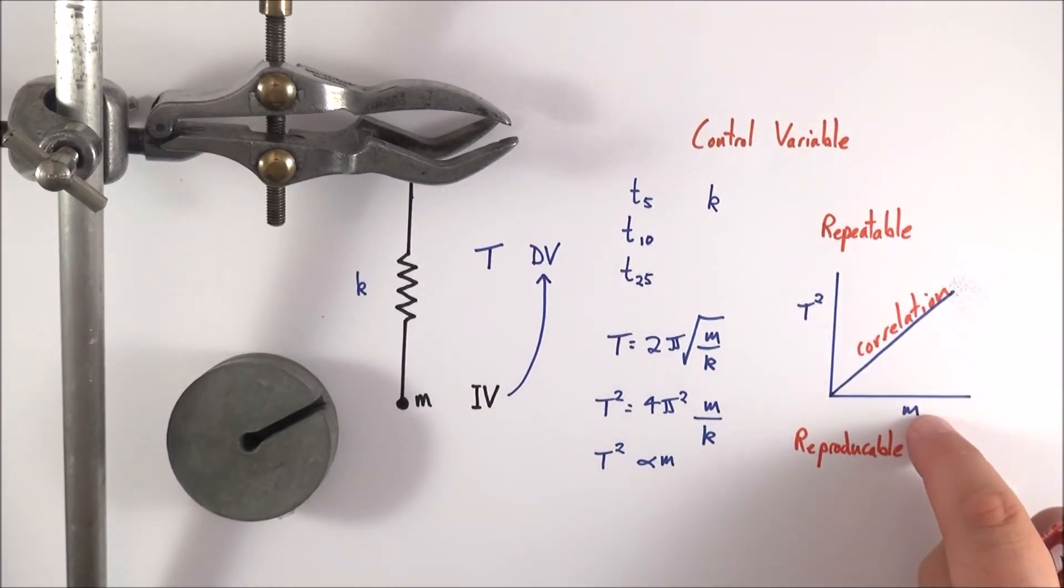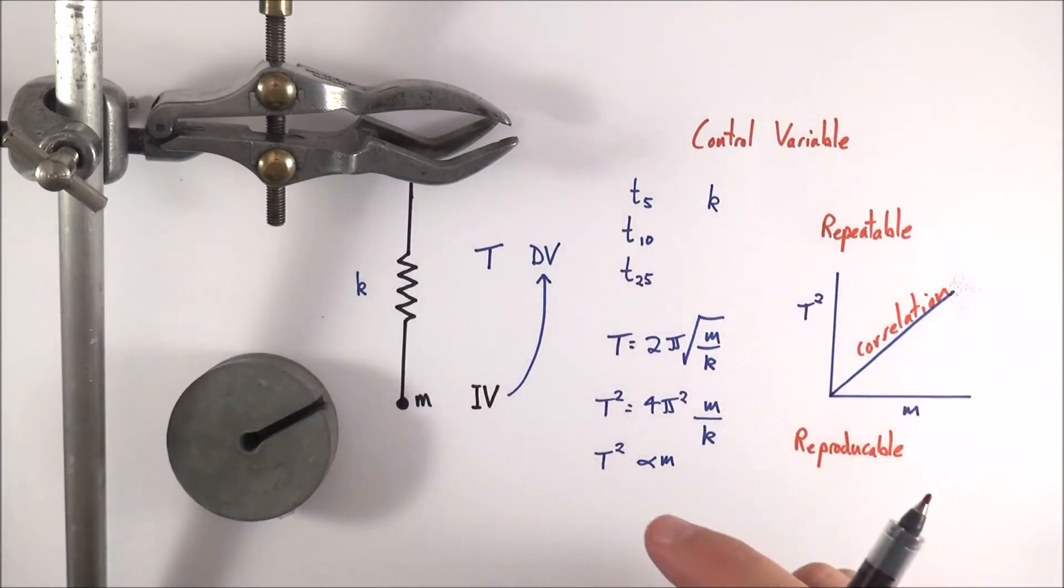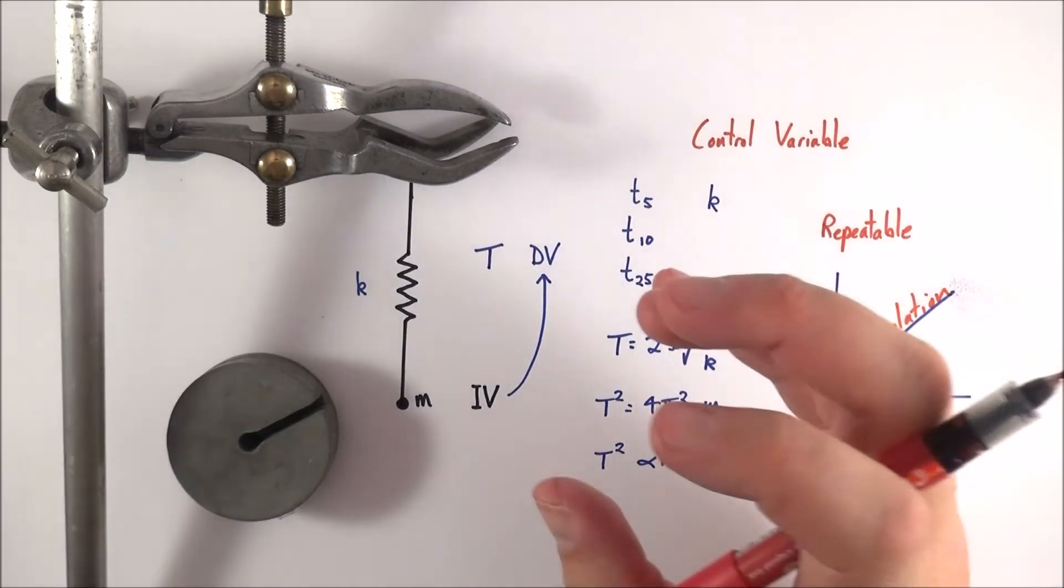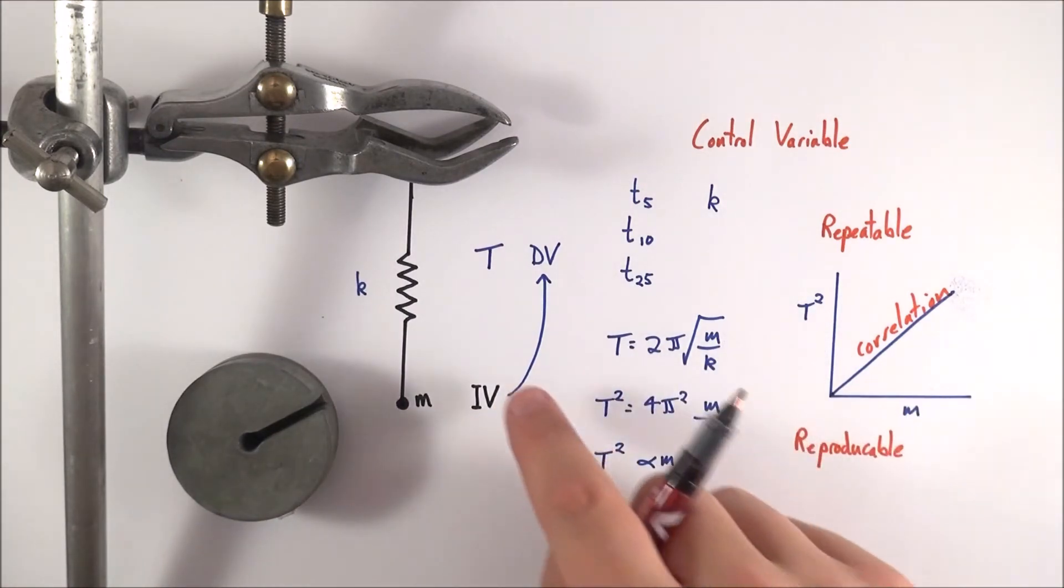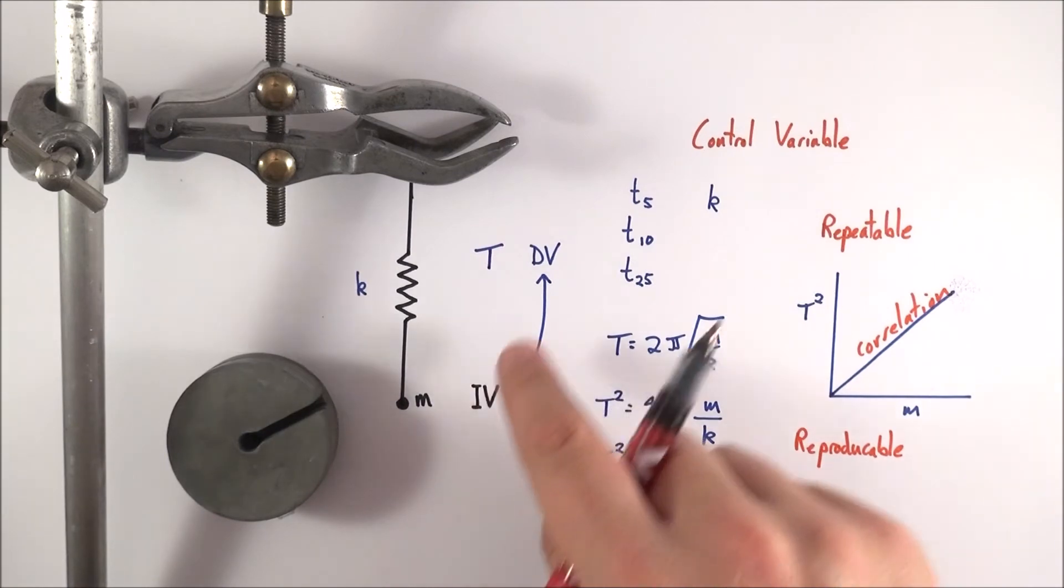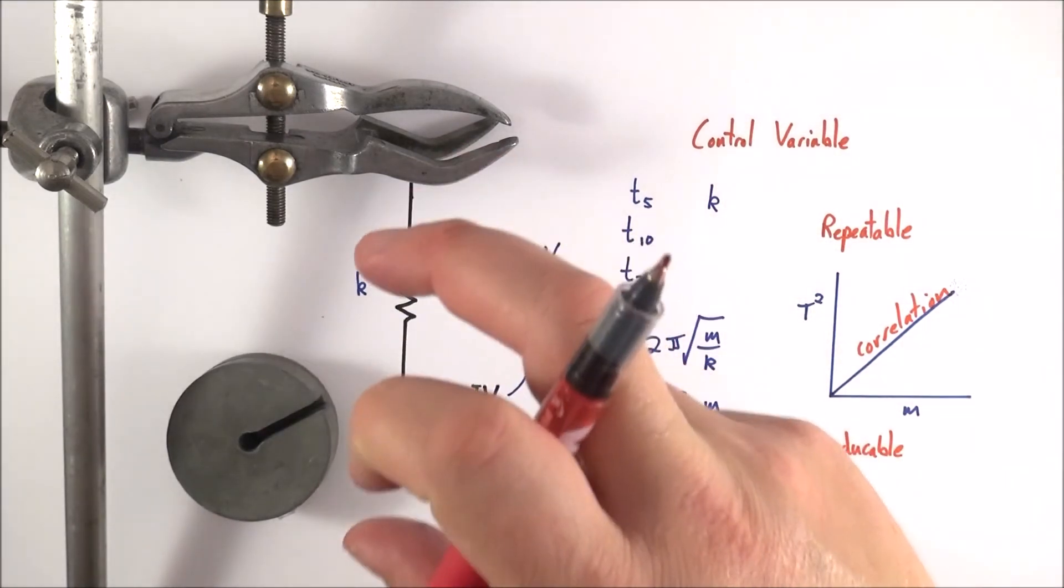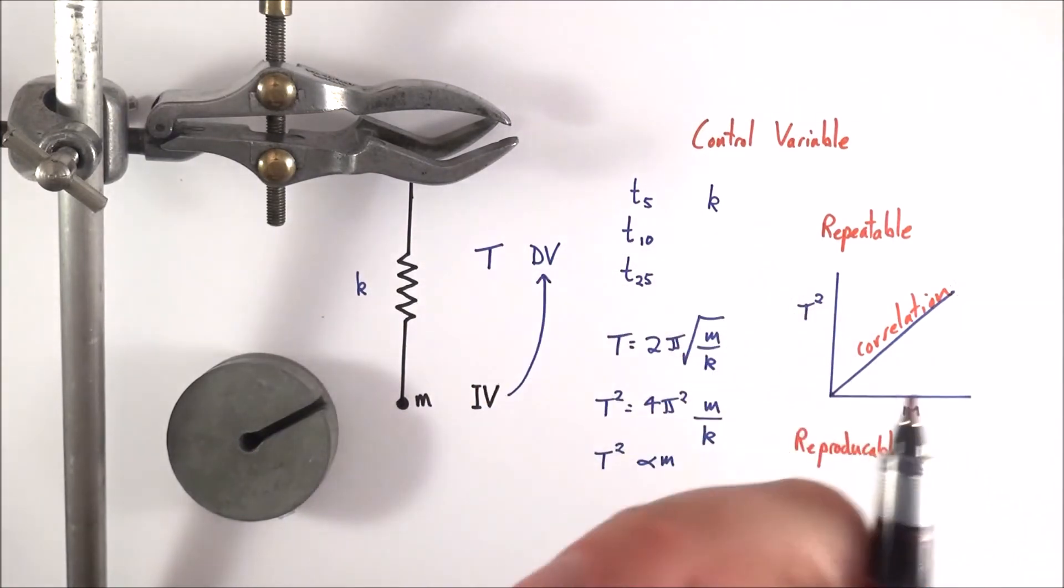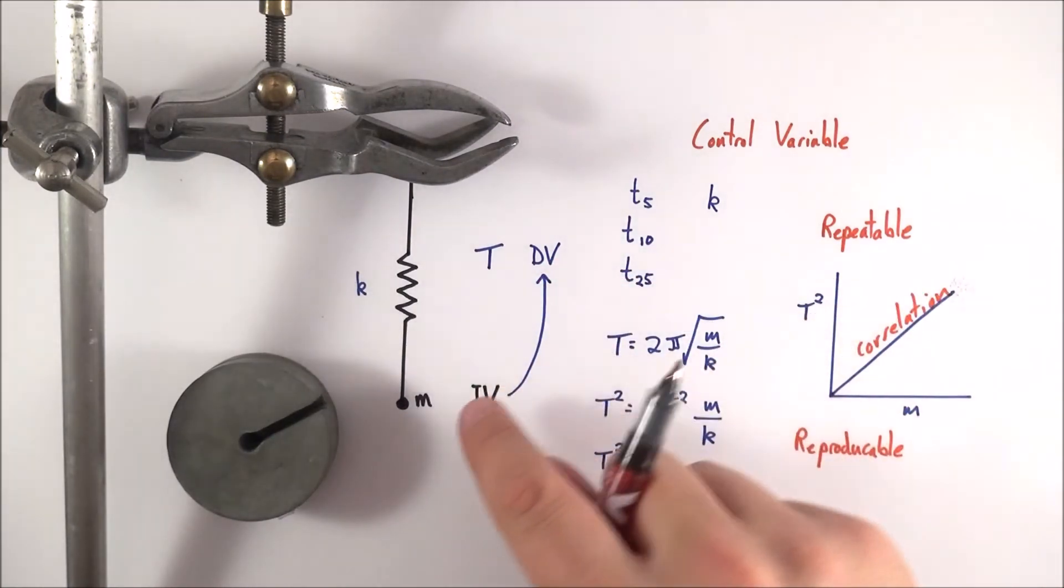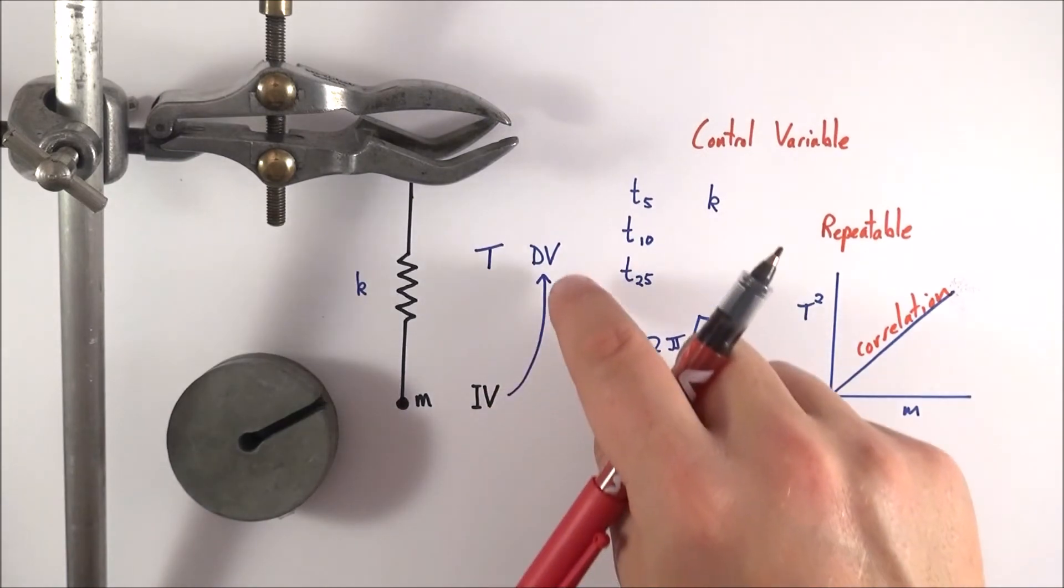Now causation means that this thing here causes a change in that. And it's only really by controlling your variables do you have a greater sort of validity in your results, which means that the independent variable that you decided to change affects something else. And if you control all of these other variables that could affect this, you've got a higher sort of validity in your experiments, you've got a higher chance of this thing here actually being the thing that controls this.